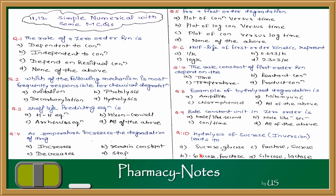Question 10: hydrolysis of sucrose leads to? If we do the inversion of sucrose, what is formed? If you have studied invert sugar, you would know that inversion of sucrose produces glucose and fructose. So the answer is B: glucose and fructose. I hope all your answers are correct — let's check the answers.